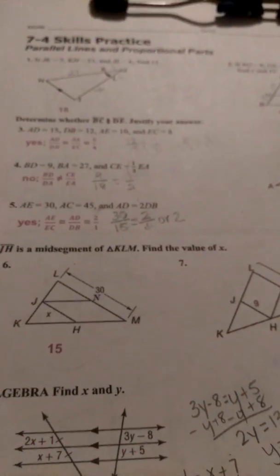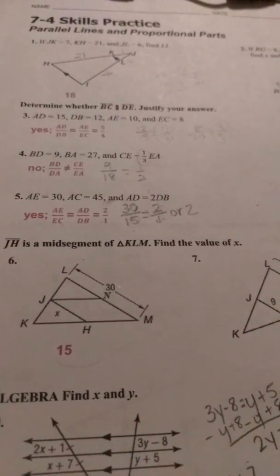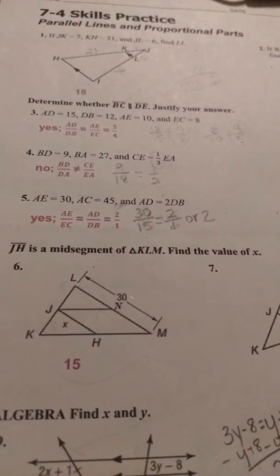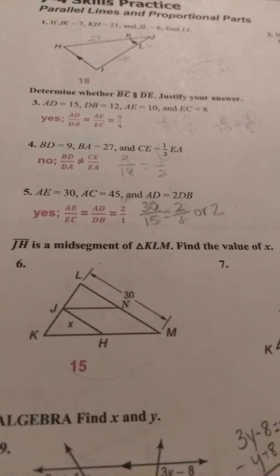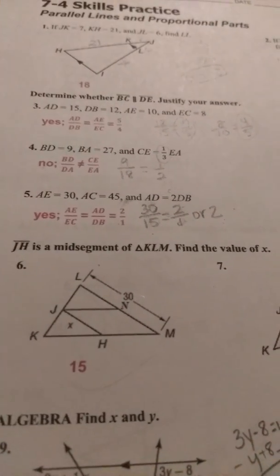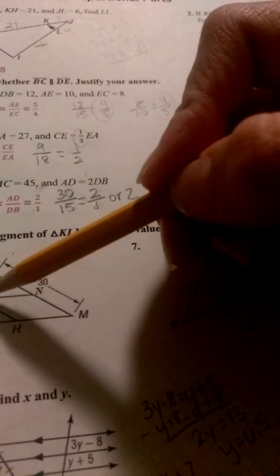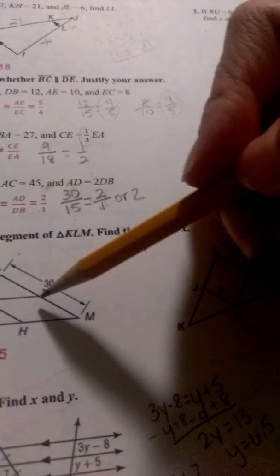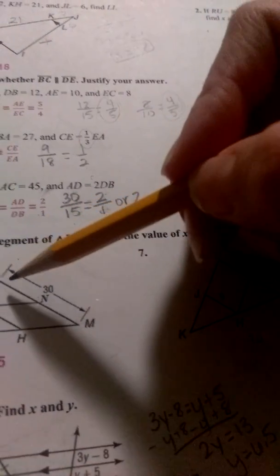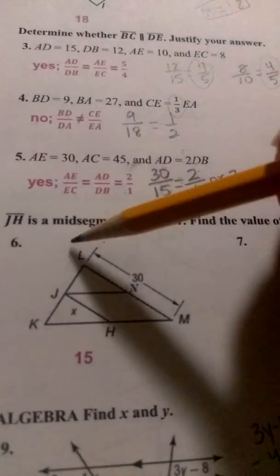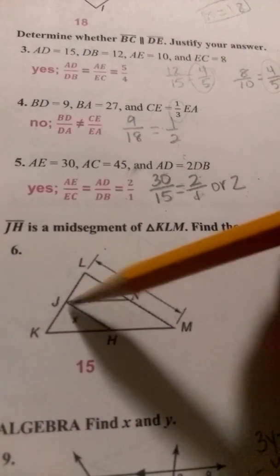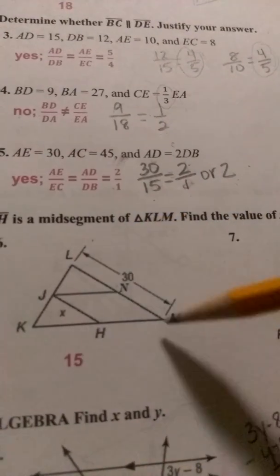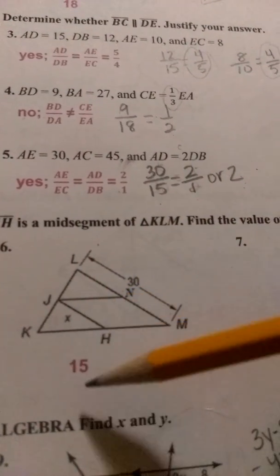Numbers 6 through 8 tells us that JH is a mid-segment of triangle KLM, and then we want to find the value of X. So because JH is a mid-segment, that means it's going to be cutting these in half here. And so since we know LM on number 6 is 30, and JH is a mid-segment, then we know it's going to be half of LM. So X is equal to 15.